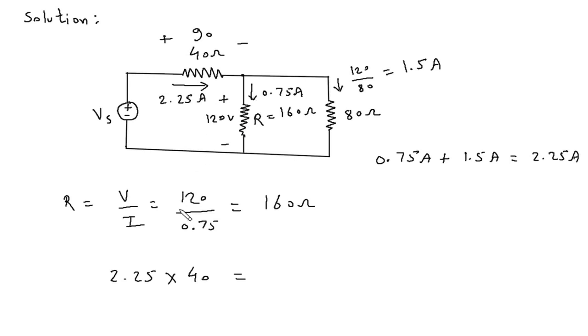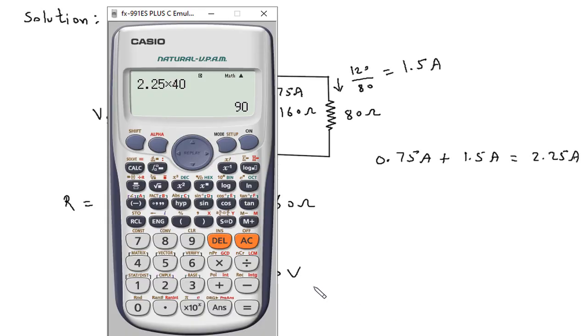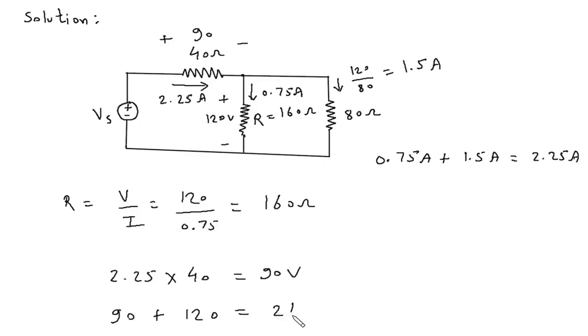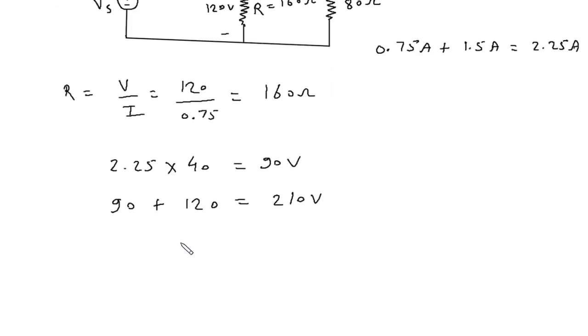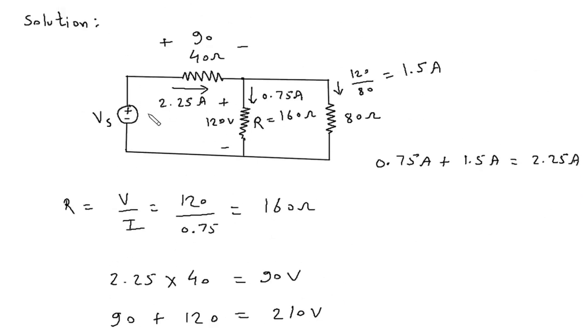And this 120, so it will be 90 volt, 90 plus 120. 90 plus 120 is equal to this total voltage. This total voltage is equal to this Vs. So 90 plus 120 is 210 volt. Therefore Vs is equal to 210. This Vs is equal to this 210 which is 90 plus 120.